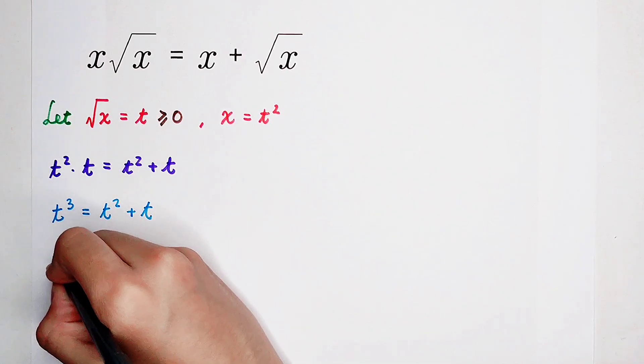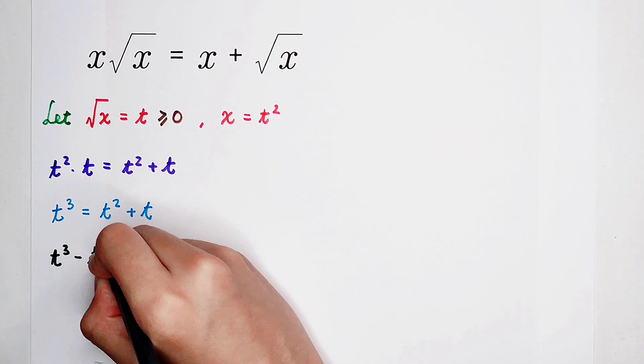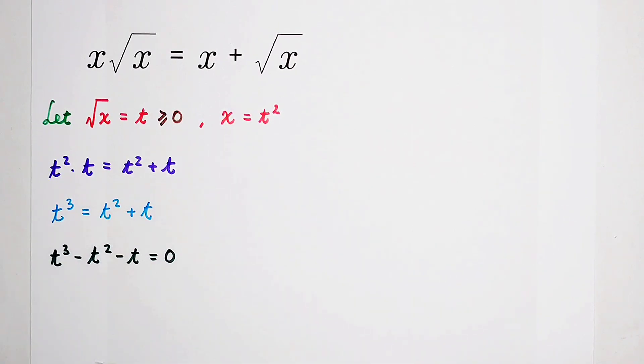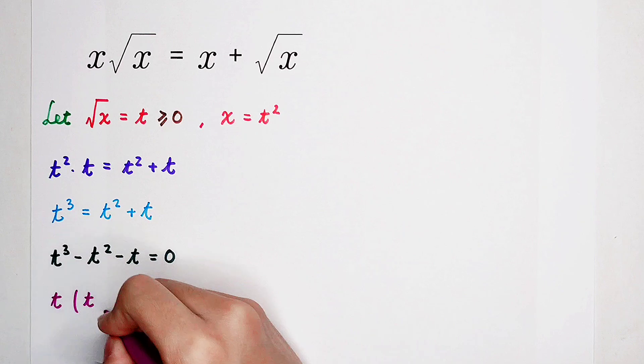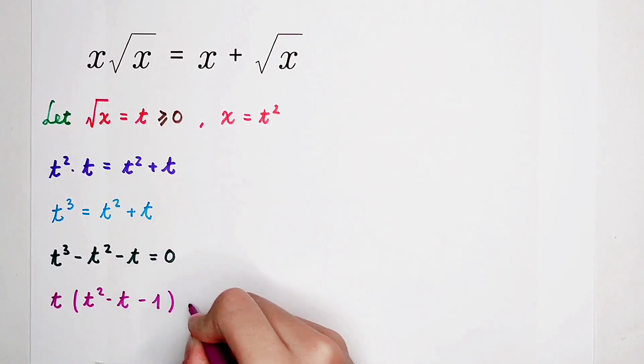Then, subtract t squared plus t on the both sides, then t cubed minus t squared minus t is equal to zero. So then, common factor, what is it? Of course, it is t. Not the t for drinking. However, the variable, t. t times t squared minus t minus one is equal to zero.